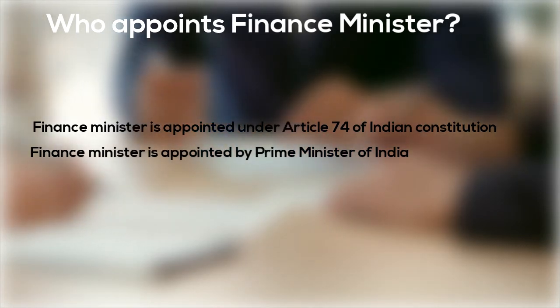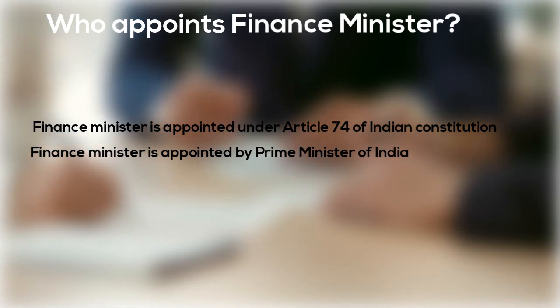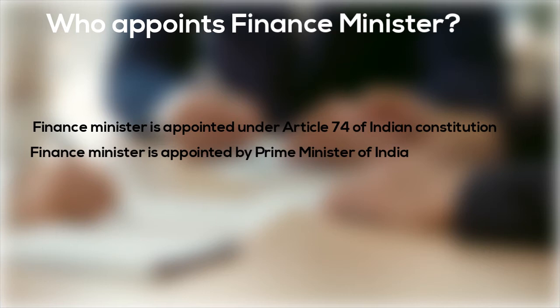The Finance Minister, like any other parliamentarian, gets a monthly salary of Rs. 50,000 during the whole term of office and Rs. 45,000 per month as constituency allowance. Apart from salary, an MP gets a number of allowances every month, such as medical allowances.